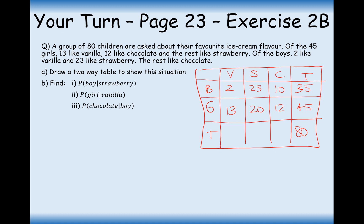Find the probability that if someone likes strawberry, they are a boy. So we're looking out of all strawberry likers — adding the columns gives 43 people who like strawberry. You can treat the conditional probability line like a fraction: boy out of strawberry. We're only looking at the strawberry people, and 23 of them are boys, so the answer is 23 out of 43.